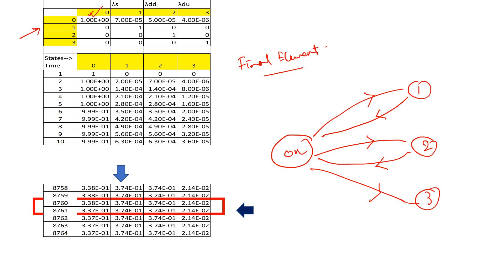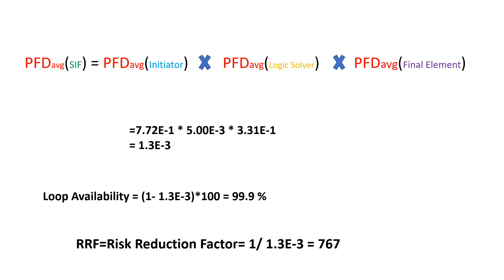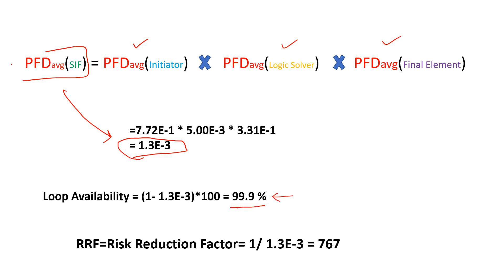We have calculated the PFD average for the final element, initiator, and logic solver. Since all three components are in series, the total SIF PFD average is the product of their individual PFD averages. The availability of the loop is 1 minus PFD average, expressed as a percentage — which comes out to 99.9%. The risk reduction factor (RRF) is 1 divided by PFD average, giving a value of 767.